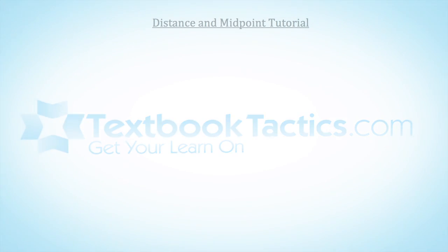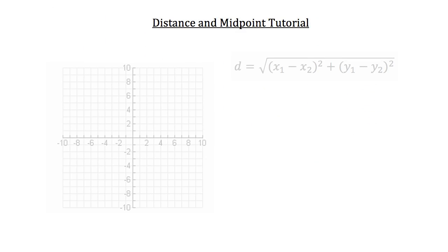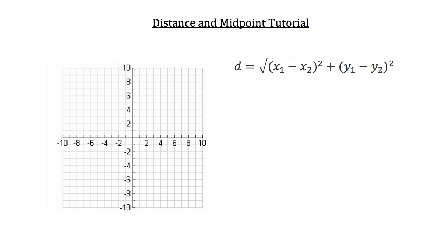This is the distance and midpoint tutorial. The first thing I'd like to talk to you about in this tutorial is the distance formula. The distance formula is provided by this equation here. D is equal to the square root of x1 minus x2 squared plus y1 minus y2 squared.